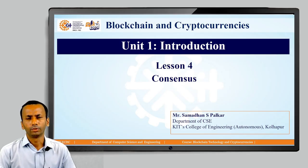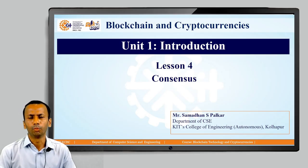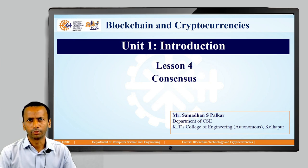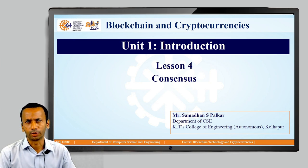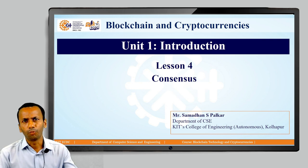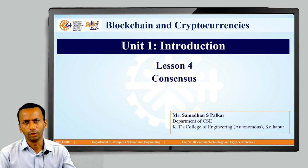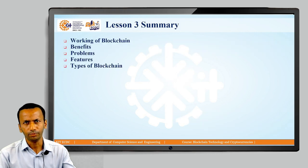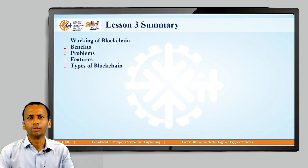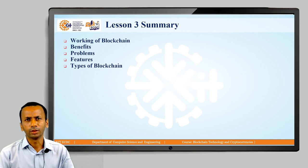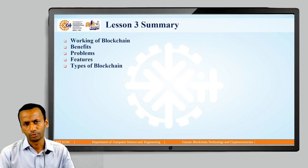Welcome to lesson number four of unit number one. The course name is Blockchain and Cryptocurrencies. Before starting lesson four, let us see what we discussed in lesson number three. The lesson three summary covers the working of the blockchain — how transactions are created, recorded, and confirmed.